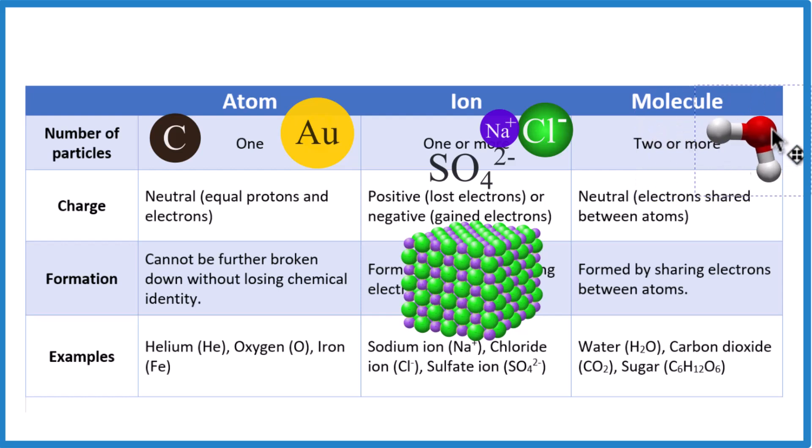For a molecule, we have two or more, like water or say methane here. And they're bonded together. So right here, this is a chemical bond. We're sharing a pair of electrons. This is a molecular or a covalent bond. Same thing here. Sharing a pair of electrons. That forms the chemical bond.